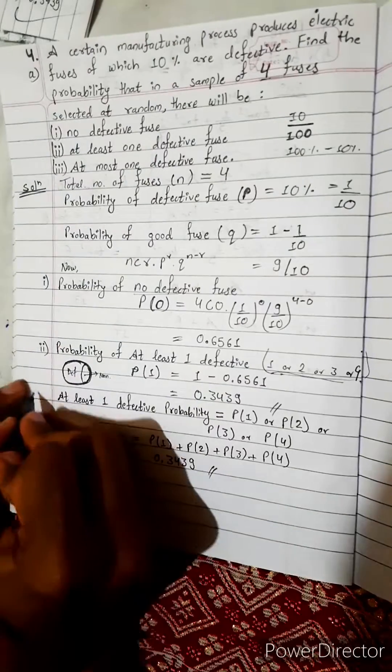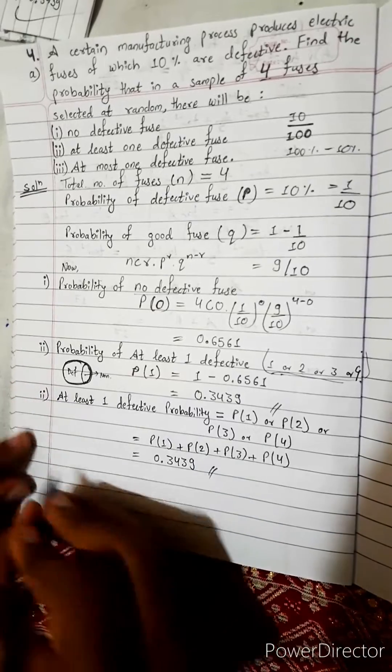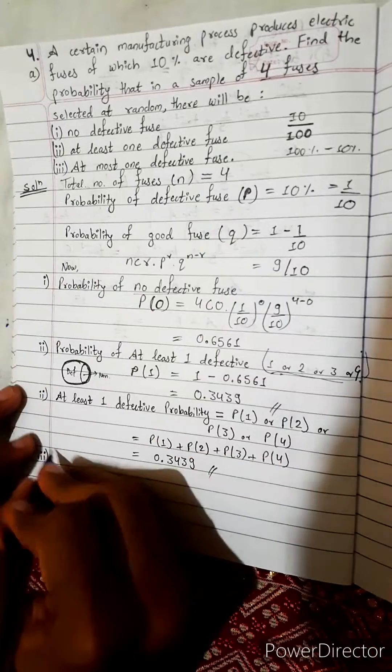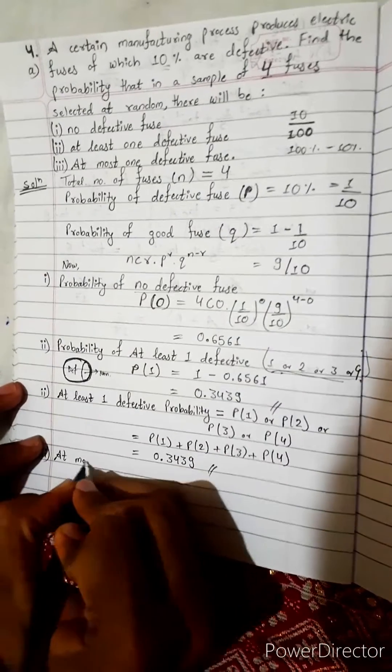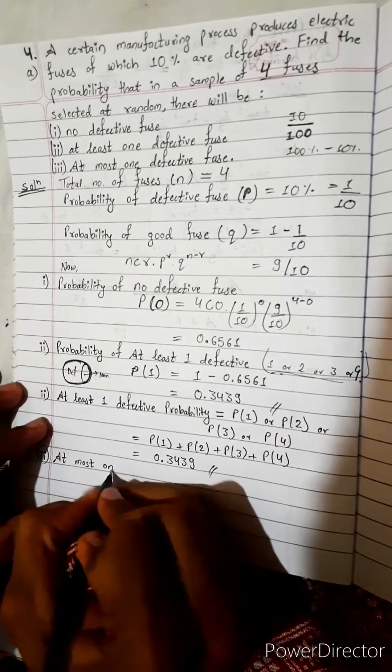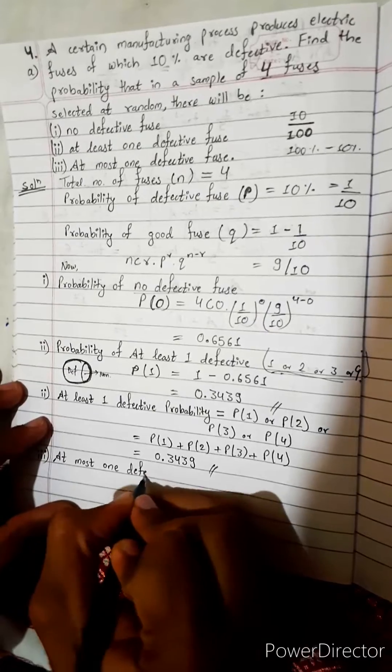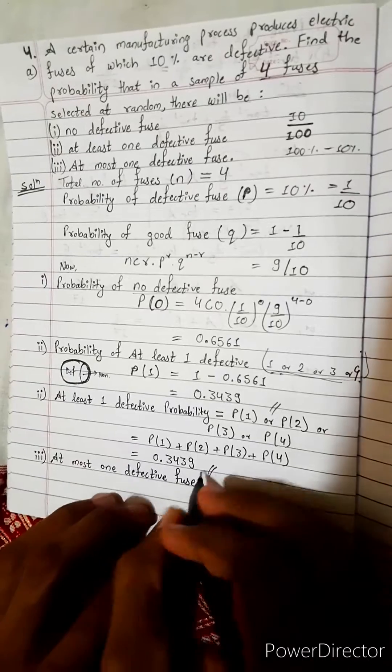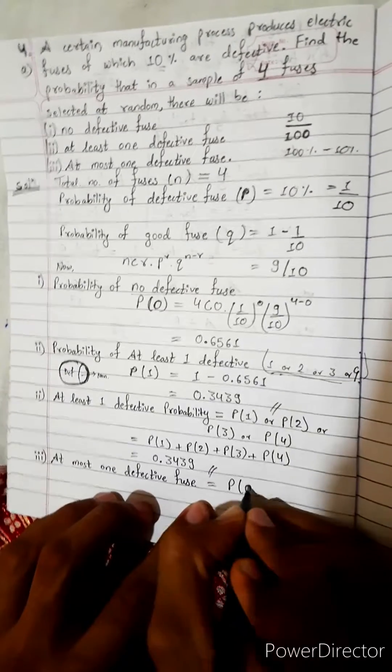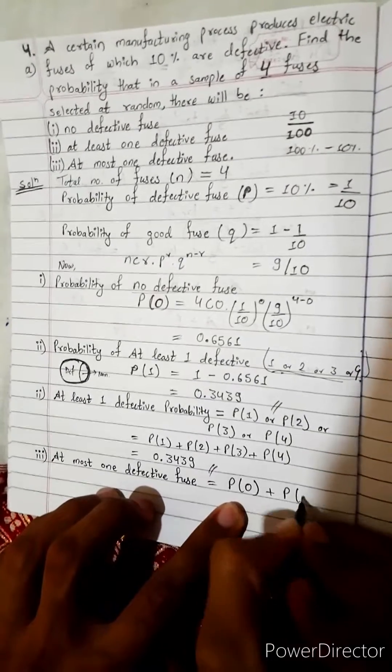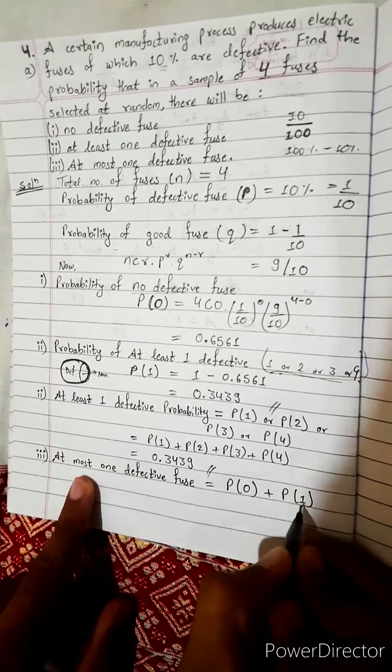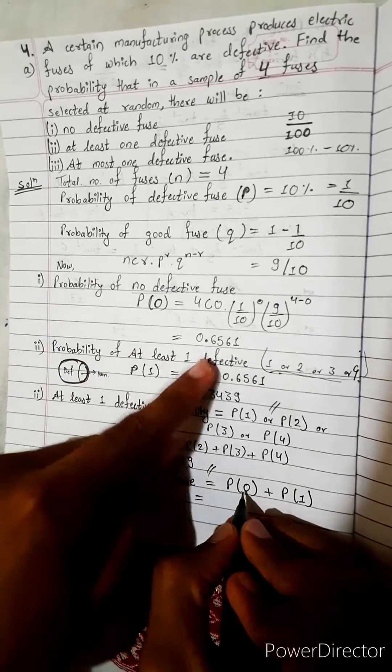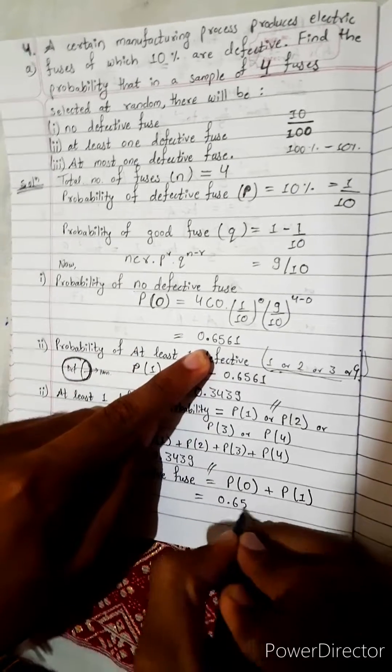Any one method you can follow. Now let's do three. What is it telling? At most one defective. It can be one defective or zero defective. P0 I have calculated just now, 0.6561.